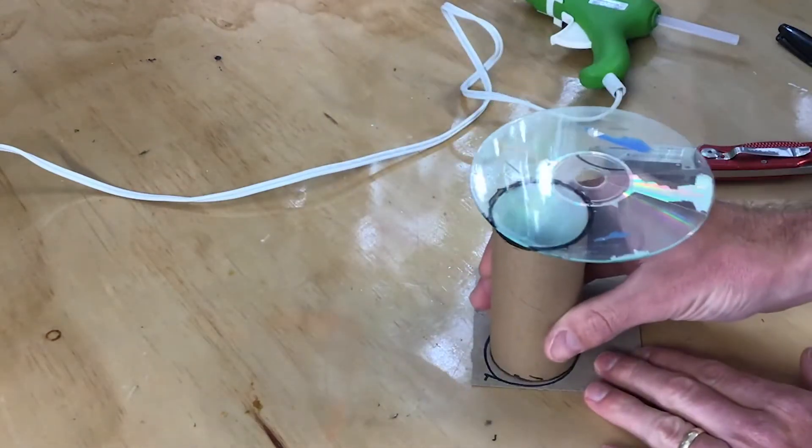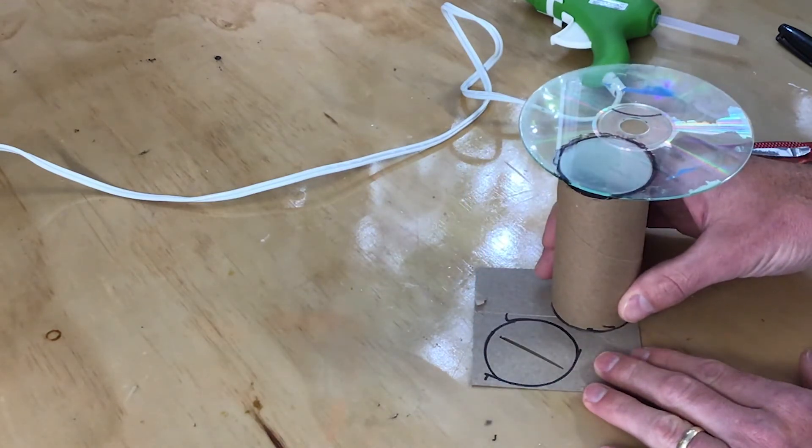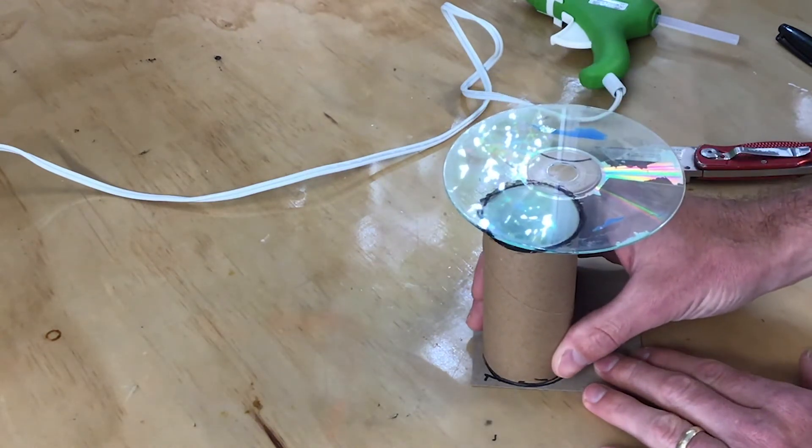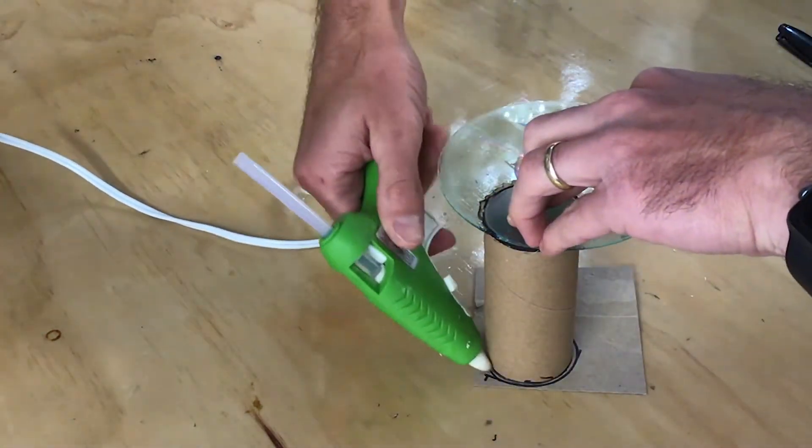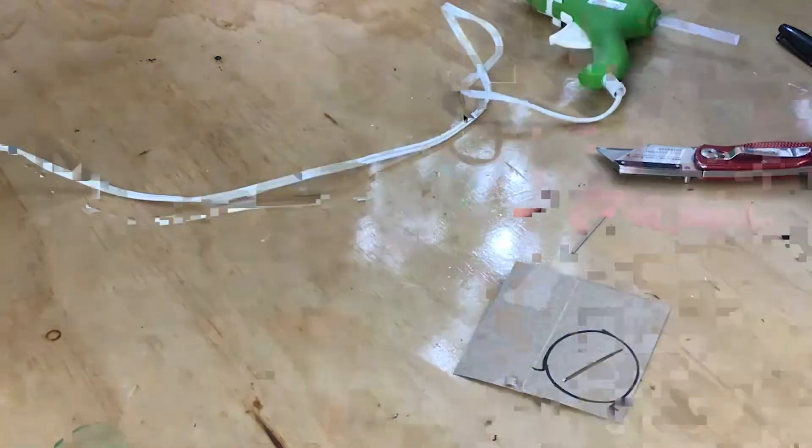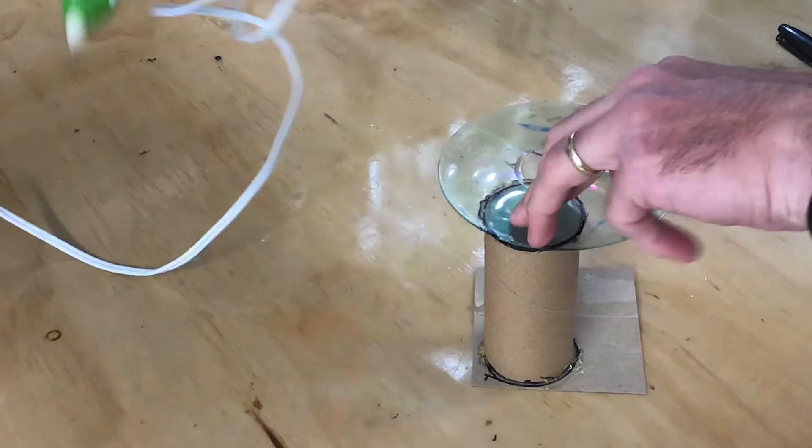Take a close look at the orientation of the slit relative to the CD here. It's kind of hard to describe, but it should be parallel to a tangent or perpendicular to a radius drawn from the center of the circle. Then hot glue it on there.